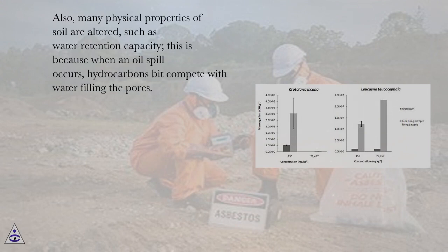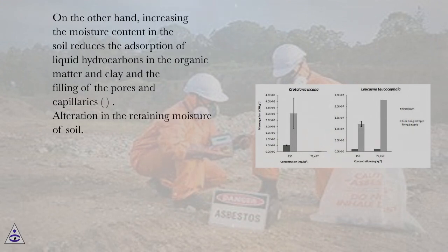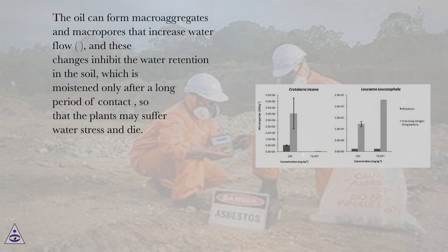Also, many physical properties of soil are altered, such as water retention capacity. This is because when an oil spill occurs, hydrocarbons compete with water filling the pores. On the other hand, increasing the moisture content in the soil reduces the adsorption of liquid hydrocarbons in the organic matter and clay in the filling of the pores in capillaries.